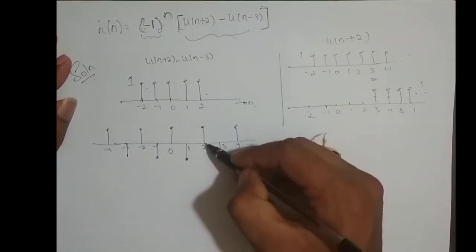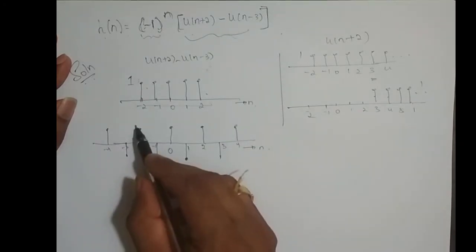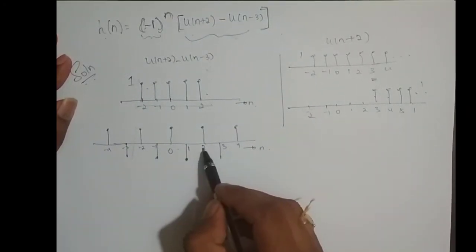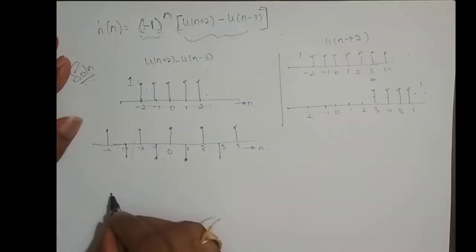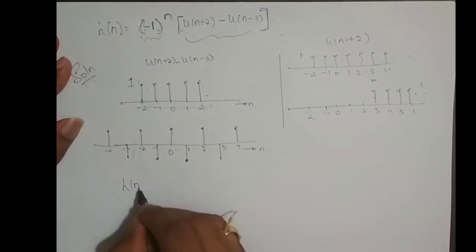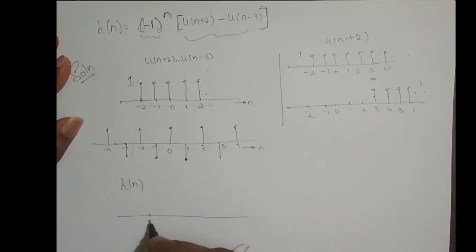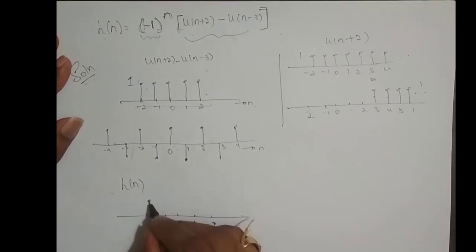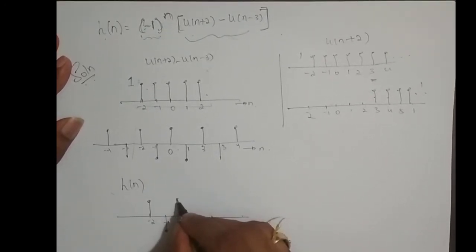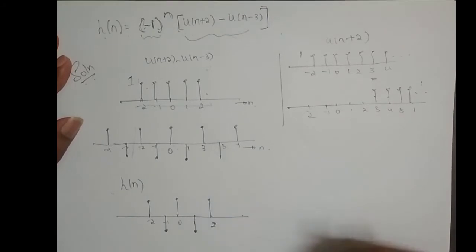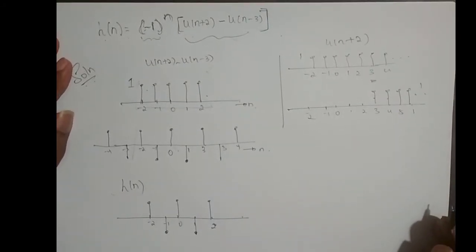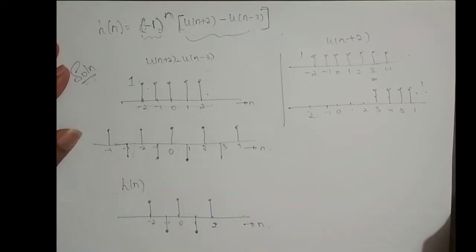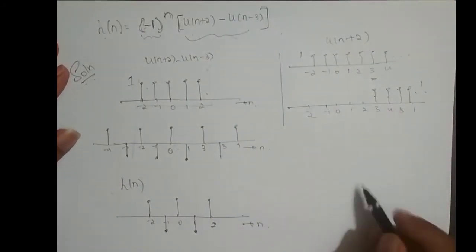So when the rectangular pulse is multiplied with (-1)^n, I get the signal for n varying from minus 2 to 2. So h(n) from minus 2, minus 1, 0, 1, 2 is: 1, minus 1, 1, minus 1, 1. This is a sketch of the impulse response h(n).